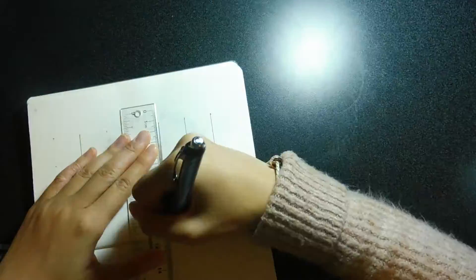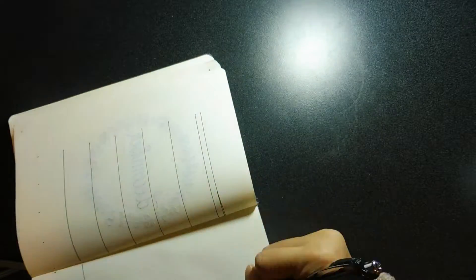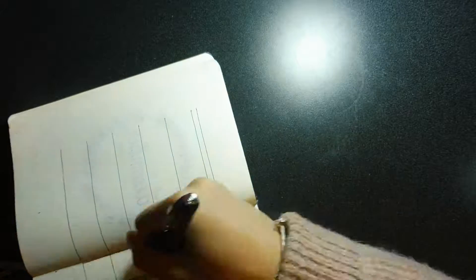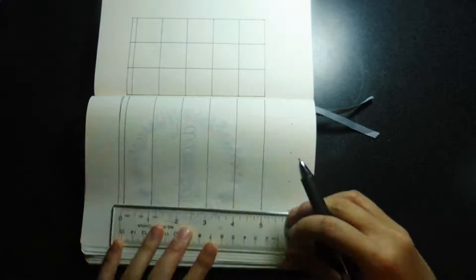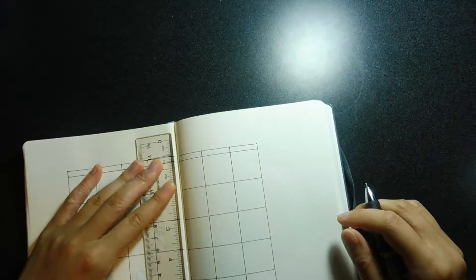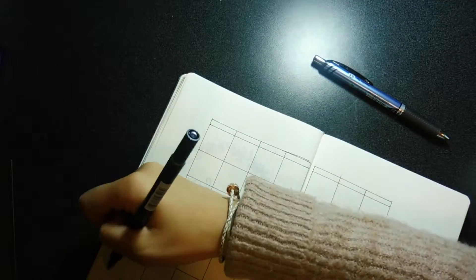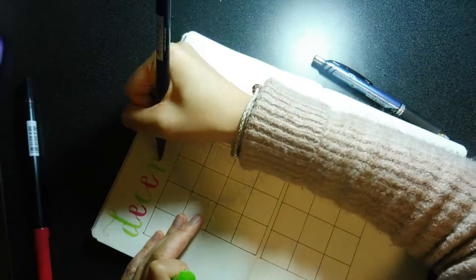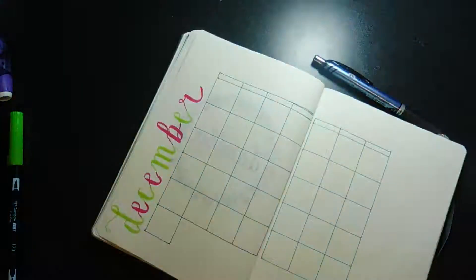For my monthly layout, I started with the actual box dates. They're like the little squares, and each square is six dots by six dots.